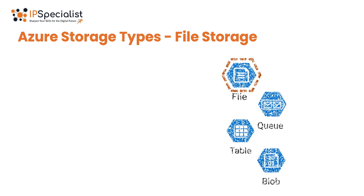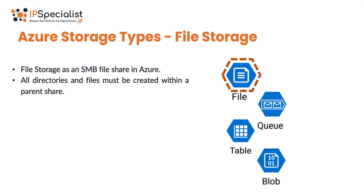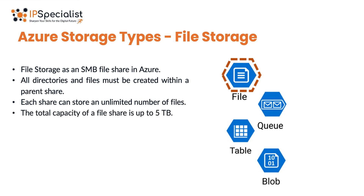The first type is File Storage. File Storage in Azure is essentially an SMB file share. This means that all directories and files must be created within a parent share. An Azure account can hold an unlimited number of shares, and each share can store an unlimited number of files, as long as the total capacity does not exceed 5TB for the file share.